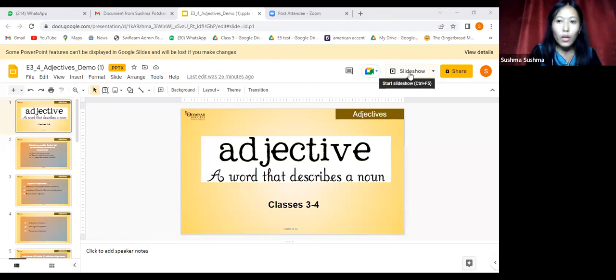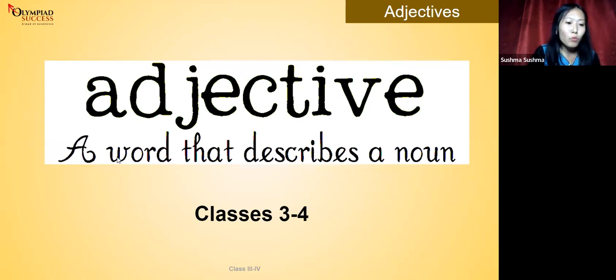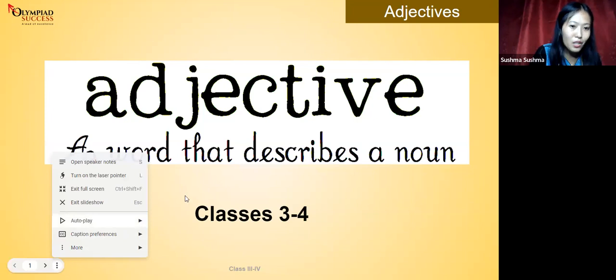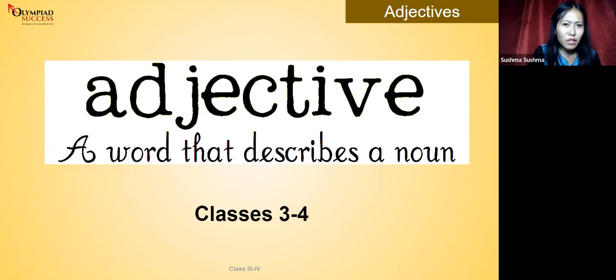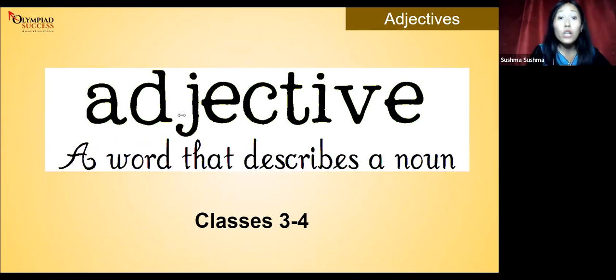When we say adjectives, it means a word that describes a noun. Many of you mentioned noun in the chat, so I think everybody knows what a noun is. Can you tell me in the chat — what is a noun? Shriya Shri said 'noun is a naming word,' Sveda said 'naming word,' Neha said 'person,' Shrijan said 'a noun is a naming word,' Palak mentioned different kinds of nouns like proper noun and common noun, and Dia gave an example.